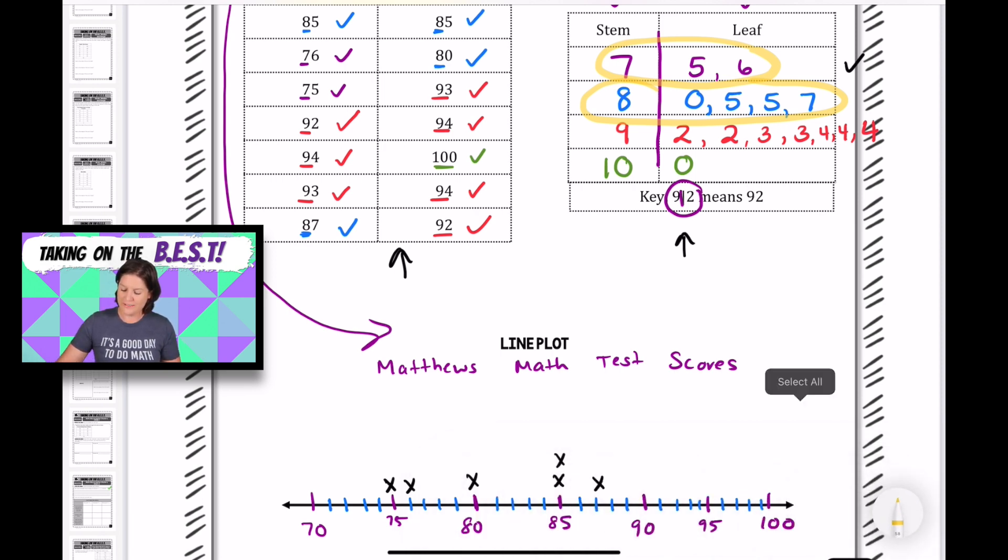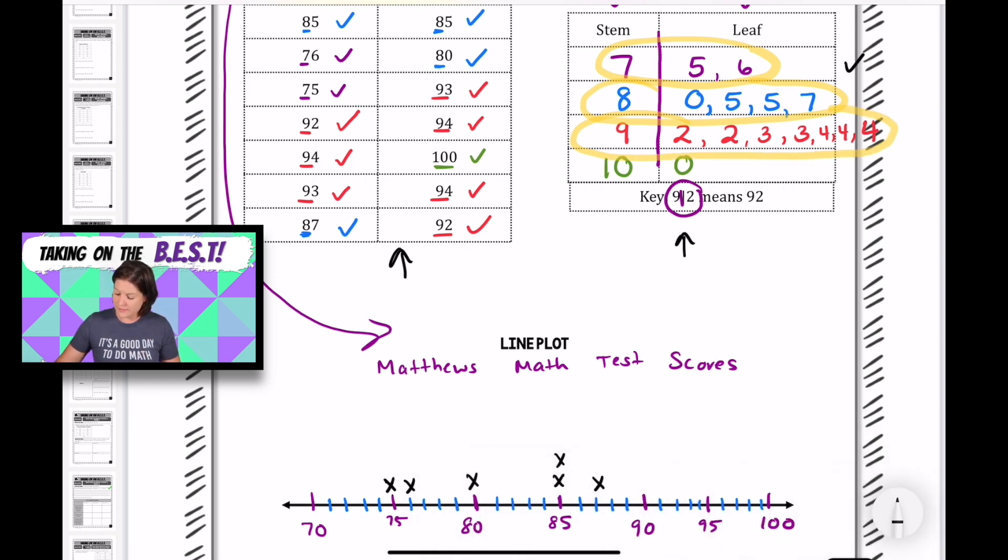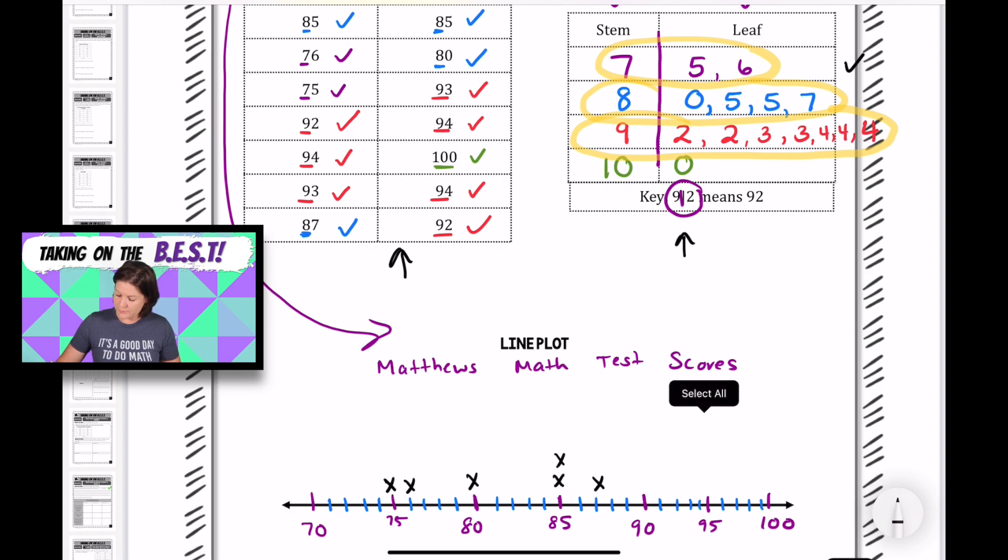Now we have our 90s right here. So we have two 92s. We need to find 92. Here's 90, pop two more over, and we need how many Xs? Two, right? We've got our 92s. We also have 93. How many 93 test scores do we have? Two. So find 93, place two Xs there. And then for 94, we have three test scores for 94.